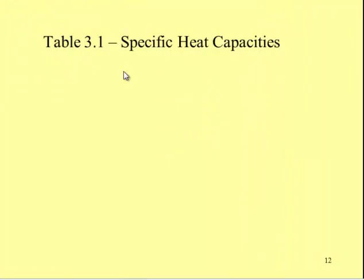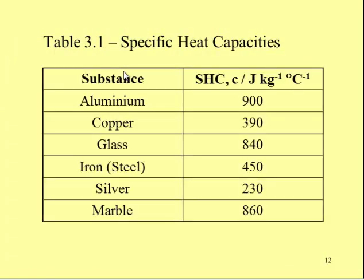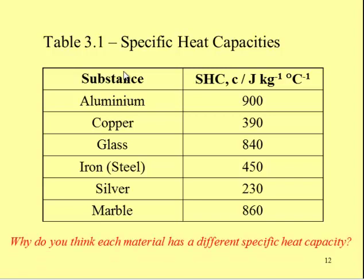Specific heat capacities are therefore constant for a material and are not affected by the mass. We have a range of different specific heat capacities because of the structure of different materials. You'll notice several different metals listed there, but there doesn't seem to be a clear theme — although metals heat up quickly, different materials have different properties, causing them to have different specific heat capacities depending on their structure.